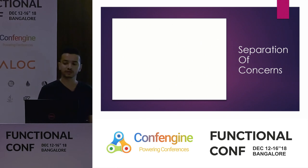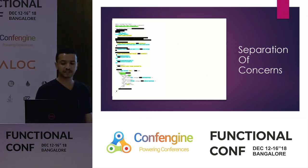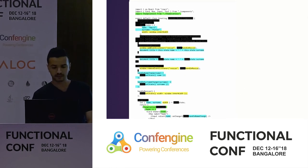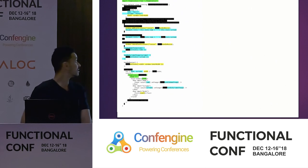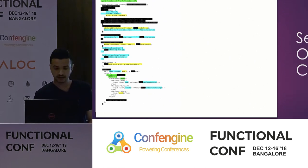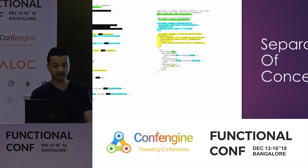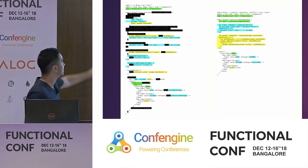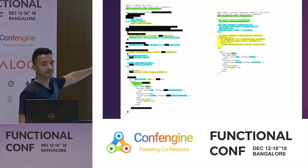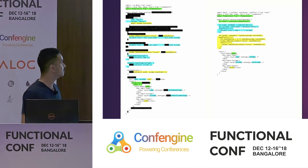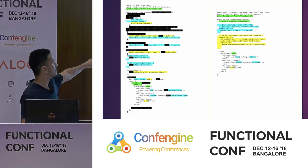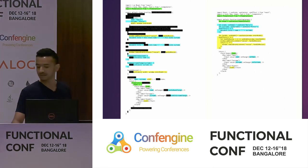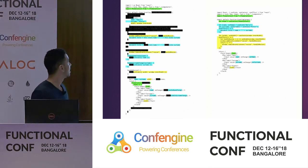Moving on to another benefit of React Hooks: that is separation of concerns. This actually is a class component, and on the right hand side you see the corresponding functional component using React Hooks. The blacked out code is actually the waste boilerplate code which gets repeated for no reason. And the color coordination means how similar concerns are scoped together.